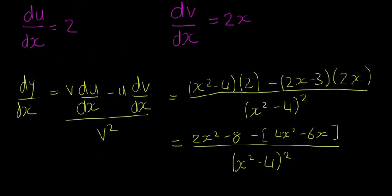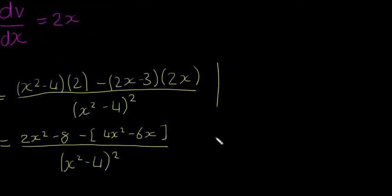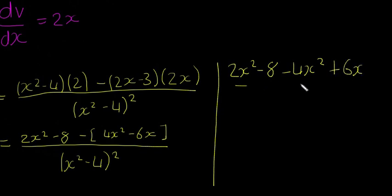So let me just move the screen over a little bit, and I'm going to draw a line down and continue. So if we continue this up here, we're going to be left with 2x squared minus 8, minus 4x squared, and minus minus 6x will leave us with plus 6x, again, all divided by x squared minus 4 squared, and our final answer then,